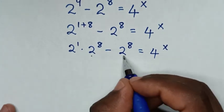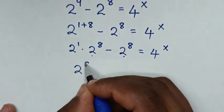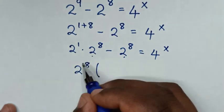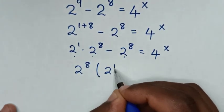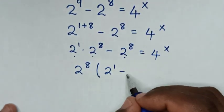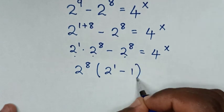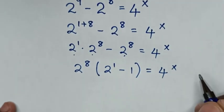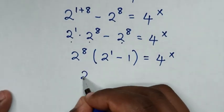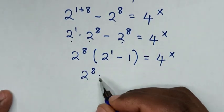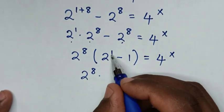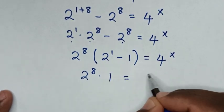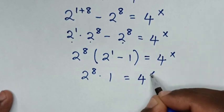Then 2 power of 8 is common, so we take 2 power of 8 out of the bracket. This gives us 2 power of 8 times the quantity 2 power of 1 minus 1, which is equal to 4 power x. So 2 power of 8 times 2 minus 1 is 1, is equal to 4 power x.